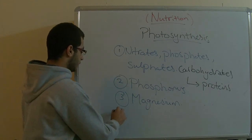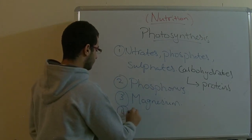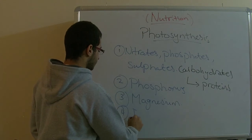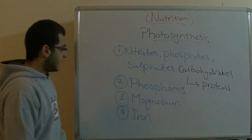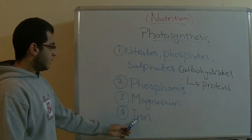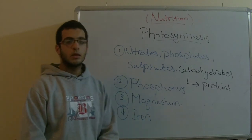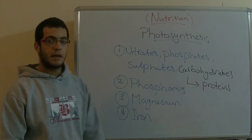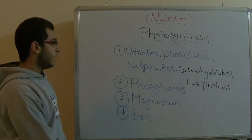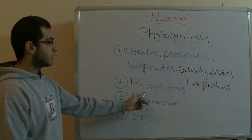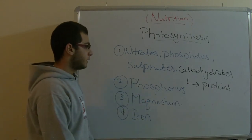The fourth thing is iron, and it is used in the manufacture of some enzymes that speed up the process of the formation of carbohydrates.